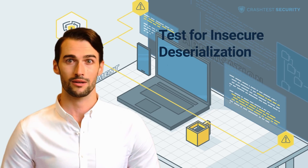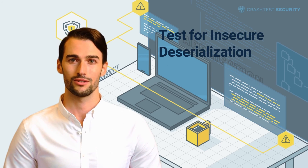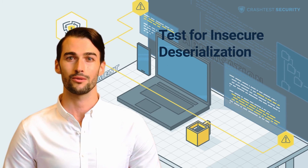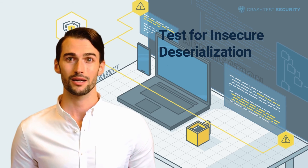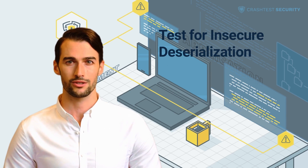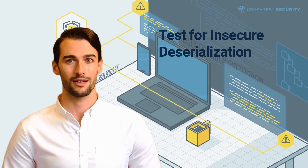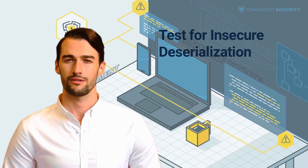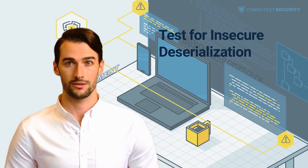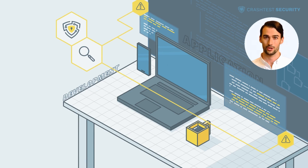You can check your application manually from the source code and in the running state for insecure deserialization testing. You can also use a static code analysis tool; however, it would require access to your code and would only provide a theoretical view of your application in a non-executed way. If you want to test your executed running application, the best approach is to use a dynamic application security testing tool, which can automatically scan your web application or API. To test if your web application is vulnerable to insecure deserialization, you can run a free invasive scan through our vulnerability testing software.